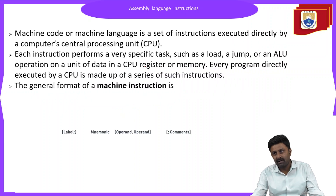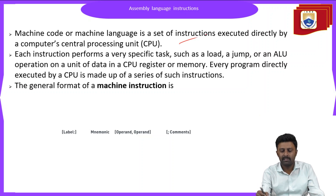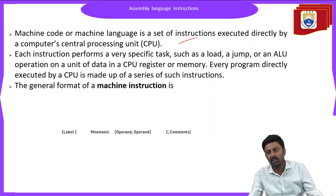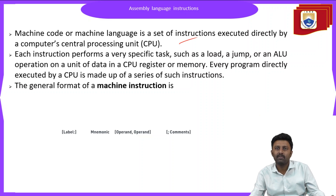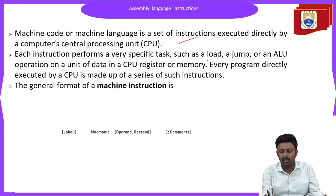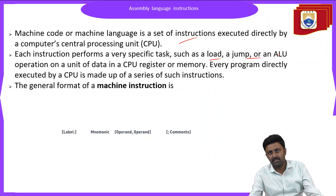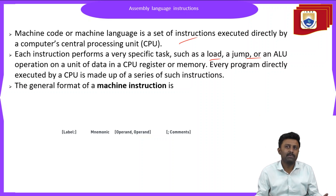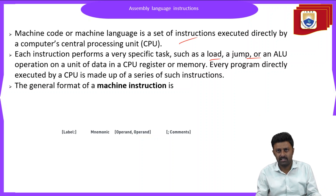Machine code or machine language is a set of instructions executed directly by the CPU. In machine level language, without the intervention of a compiler or simulator, we directly execute the instructions. Each instruction performs a very specific task such as load, jump, or ALU operations on a unit of data in a CPU register or memory. Every program directly executed by the CPU is made up of a series of such instructions.